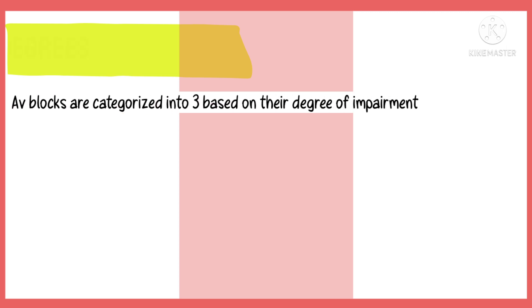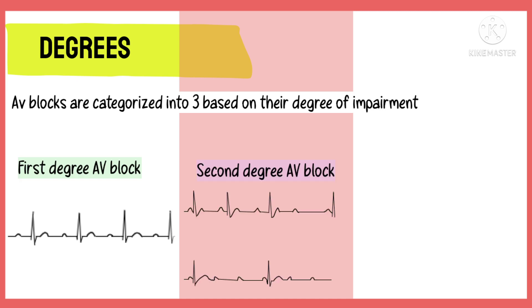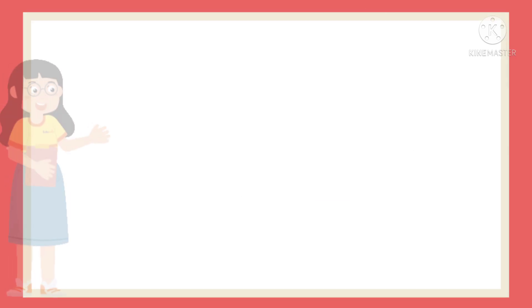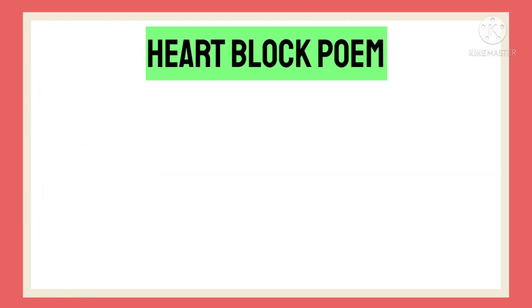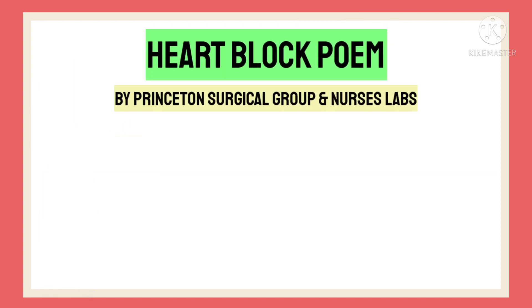The AV blocks are categorized into 3 types based on the degree of impairment. They are divided into 1st degree AV block, 2nd degree AV block, and 3rd degree AV block. Before discussing them in detail, let's begin with the famous heart block poem by the Princeton Surgical Group and the Nurses Labs, which will help you remember the ECG changes seen in each degree of AV block.